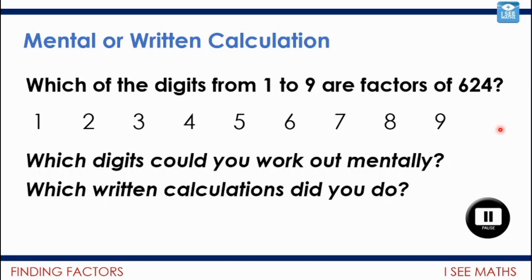Okay, let's have a little look. So, well, I'm going to say 1 definitely is. If I count up in 1s, I'll certainly get to 624. And of course 2 is because it's an even number. And 5 isn't because I know that multiples of 5 end in 5 or 0. Didn't need to do any calculation there at all.